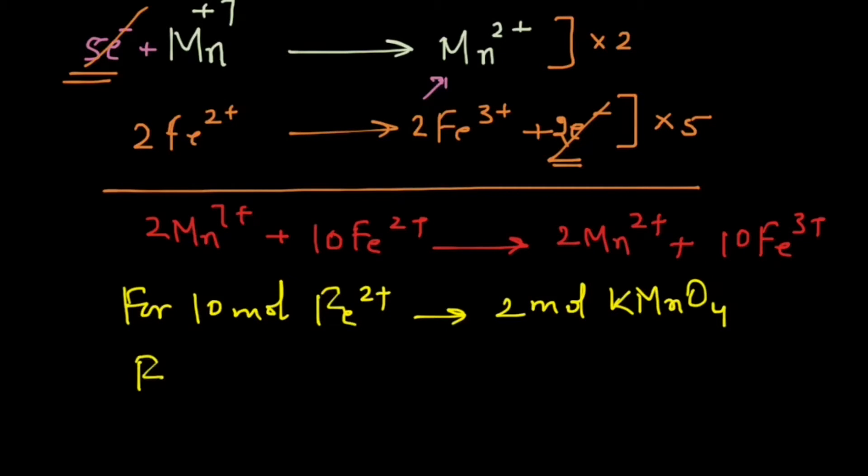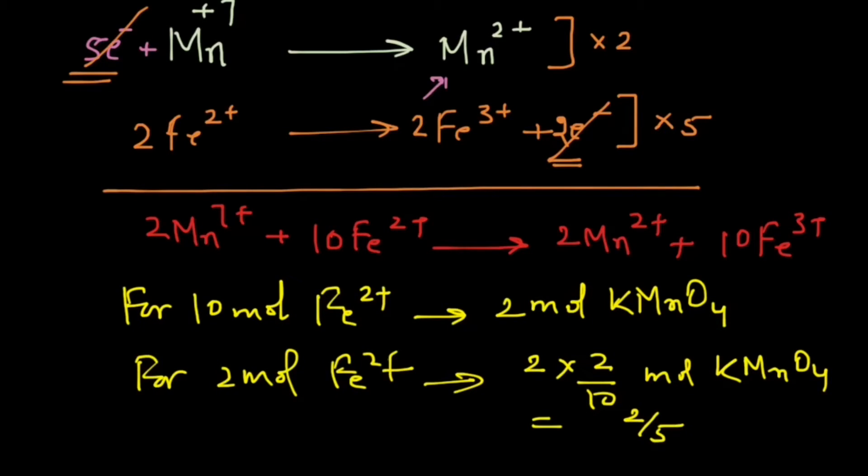And so for 2 moles of Fe2+ we will need 2 times 2 upon 10 mole KMnO4, that gives us 2 upon 5 mole. So for the oxidation of 2 moles Fe2+ ions we need 2/5 mole KMnO4.